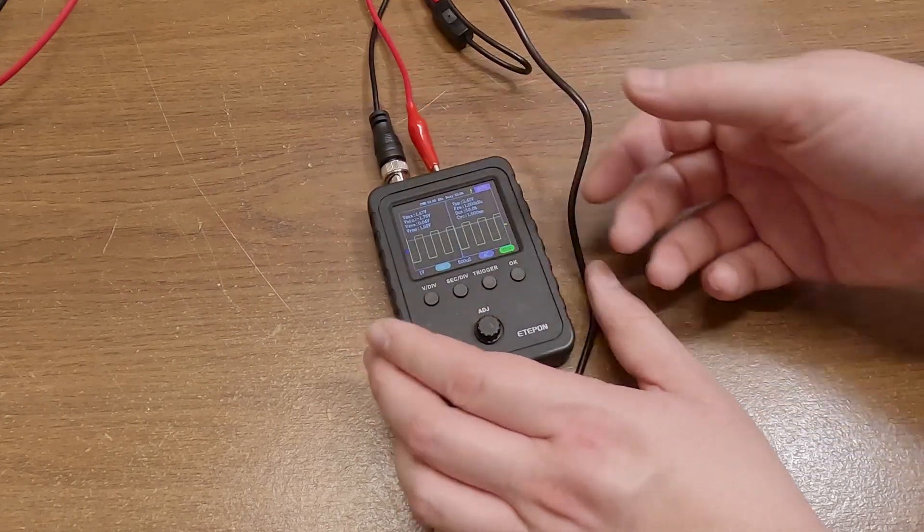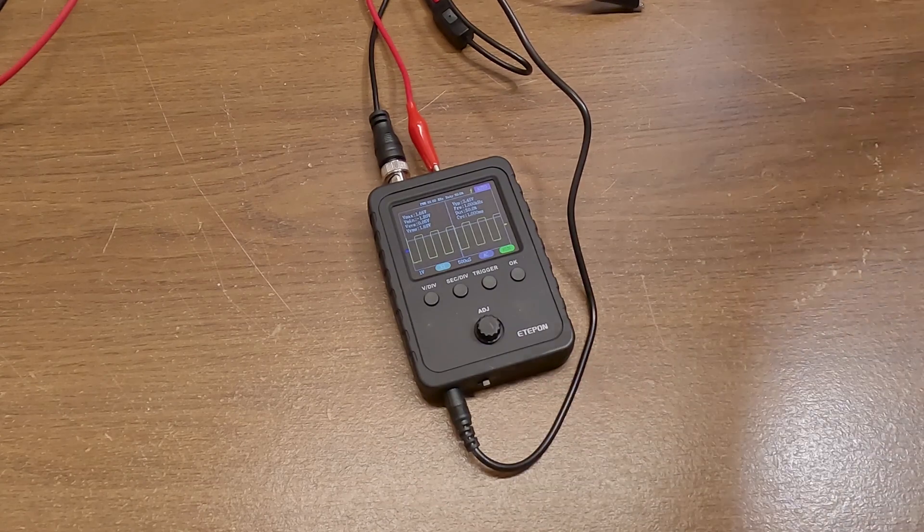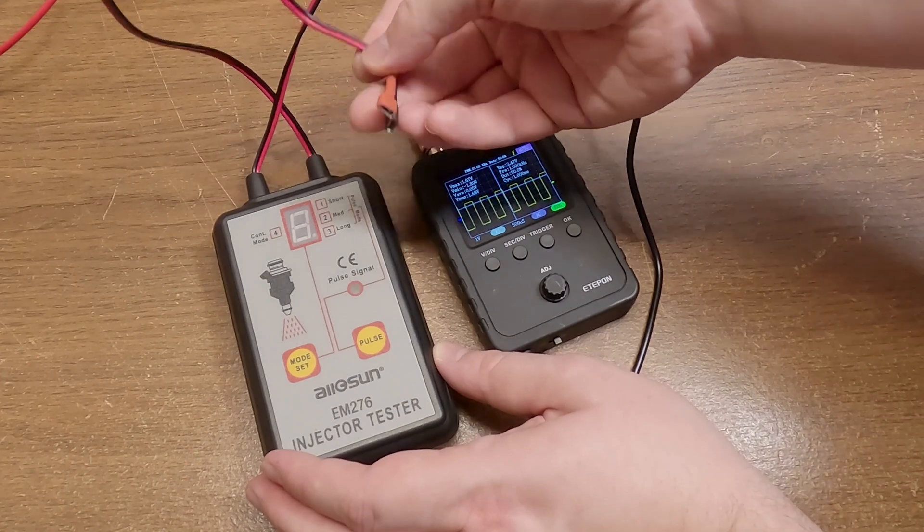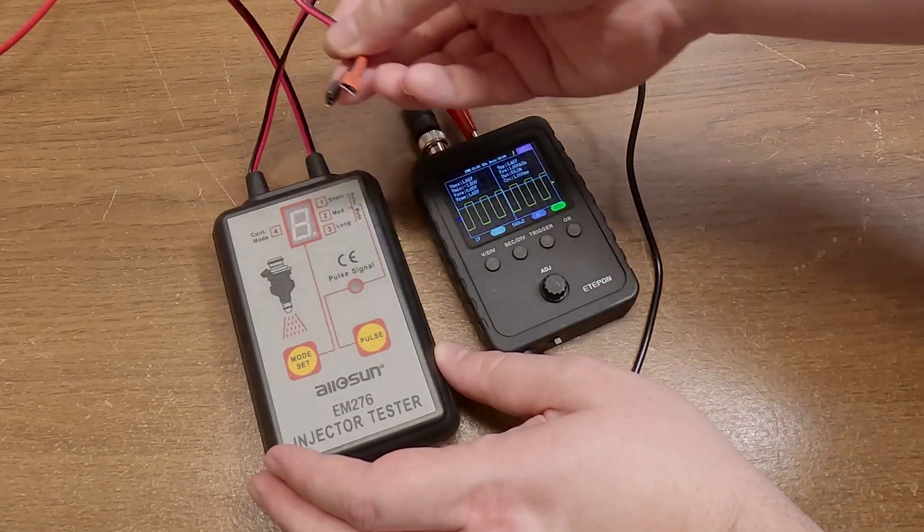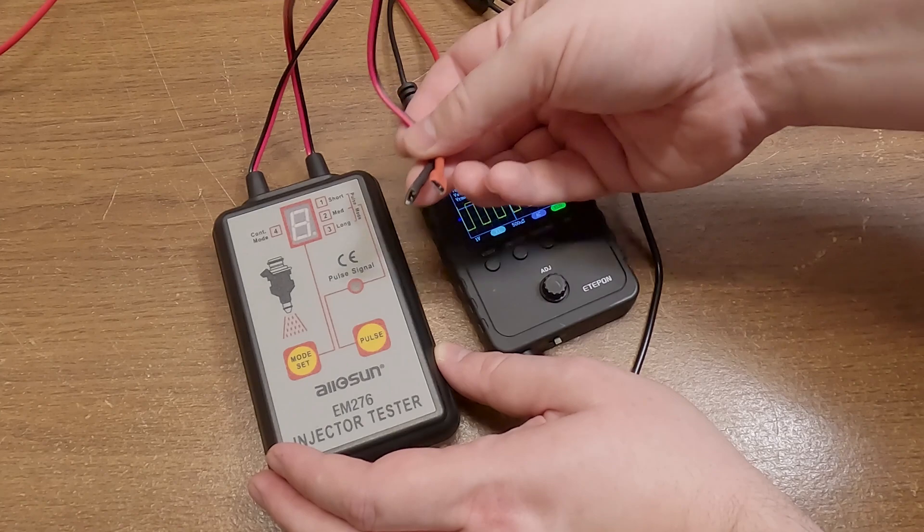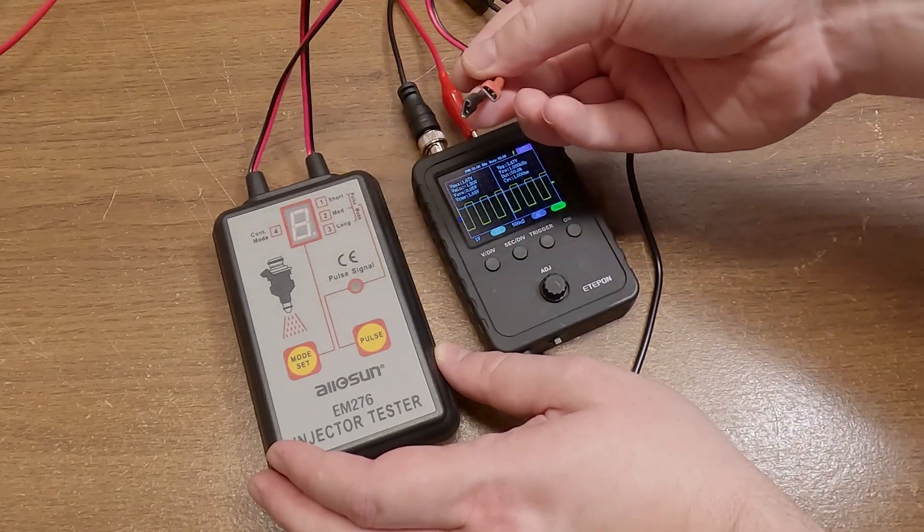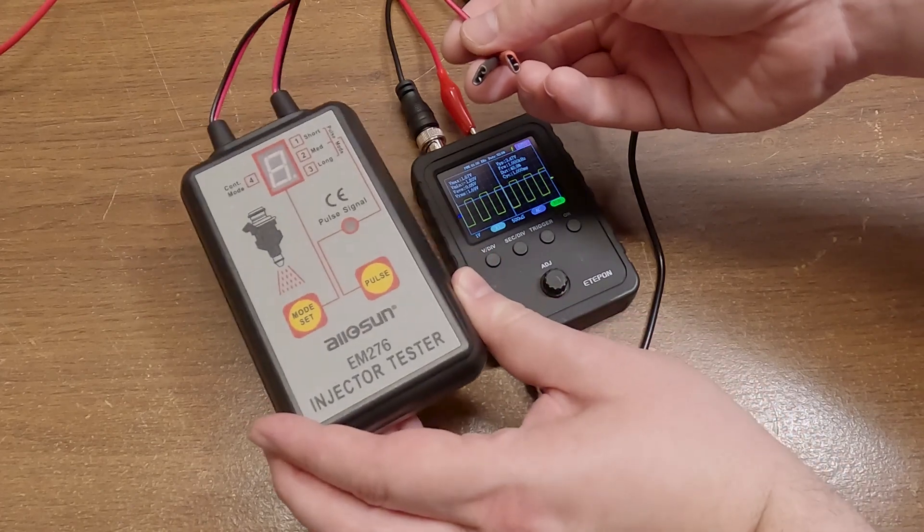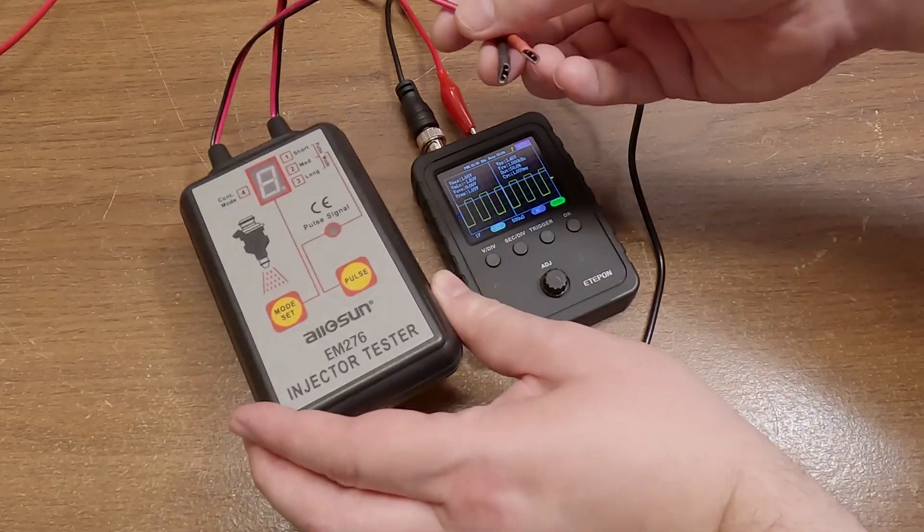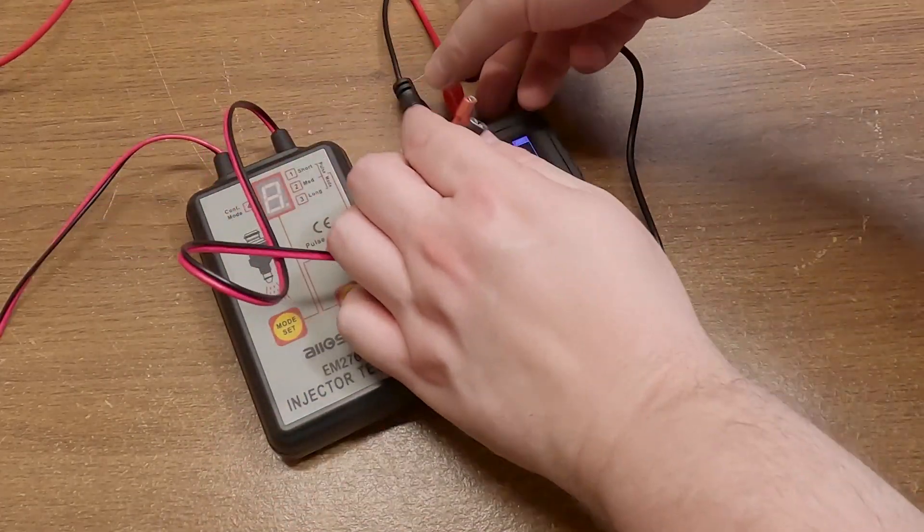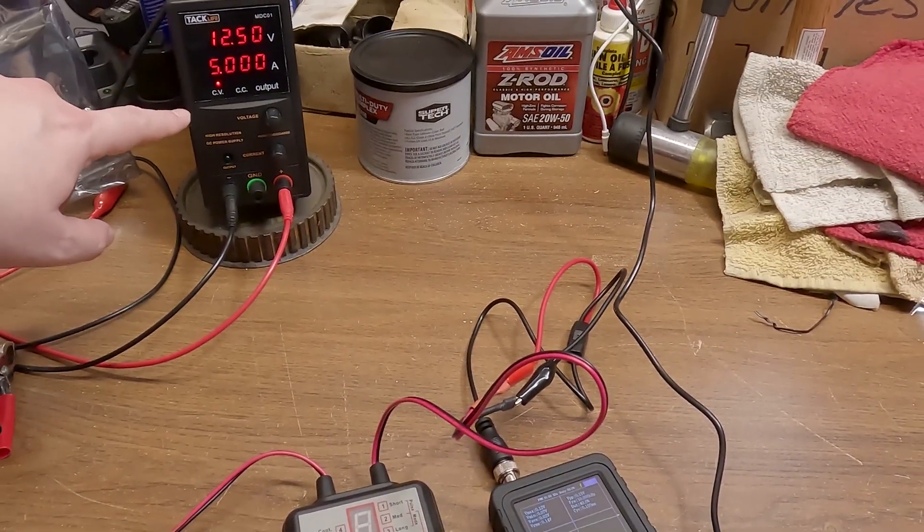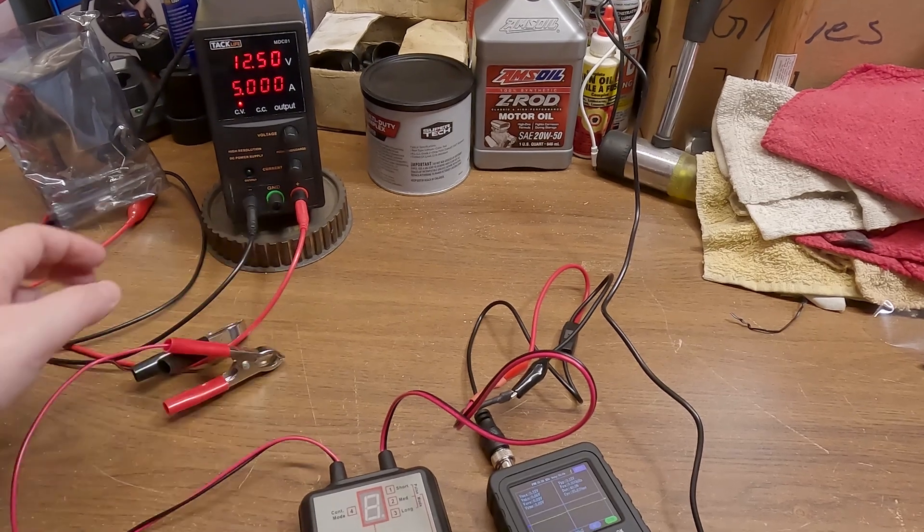Now I don't really have any sensors that we can test with, but I do have something we can try out. This is a fuel injector tester. You can hook this guy up to injectors and pulse them to make sure they're putting out the correct amount of fuel or just to test their operation. I'll drop a link for this down in the description because it's kind of a handy thing to have around. We can get this guy hooked up. I've got a little bench power supply over here that I can hook up the injector tester to.